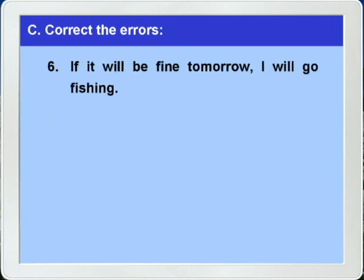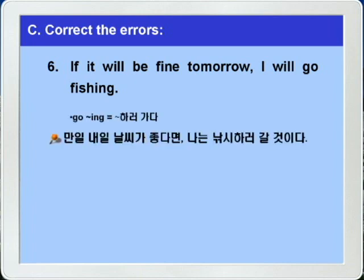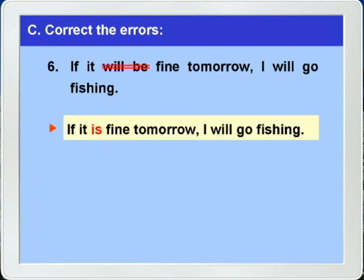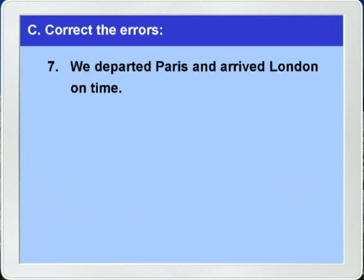6번, If it will be fine tomorrow, I will go fishing. 만일 내일 날씨가 좋다면 나는 낚시하러 갈 것이다. 여기 if는 조건의 뜻이니까, 조건의 if절에서는 현재 시제가 미래의 시제를 대신한다고 했으니까, 정답은 will be를 is로 고치면 되는 것입니다. If it is fine tomorrow, I will go fishing.